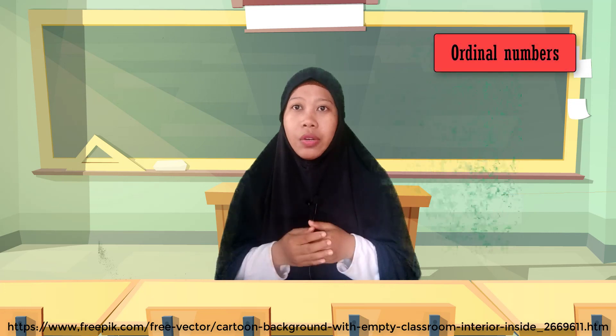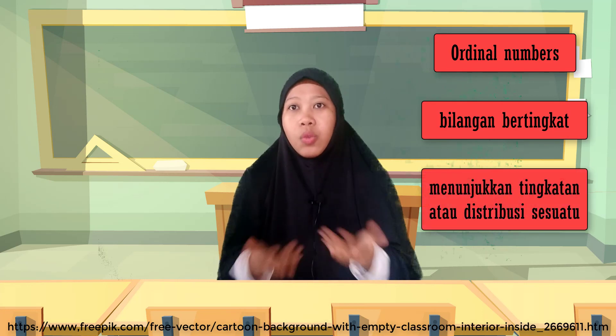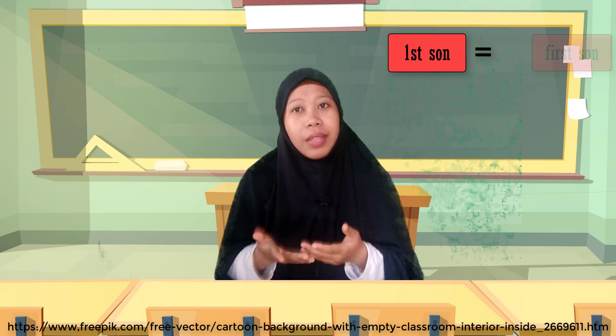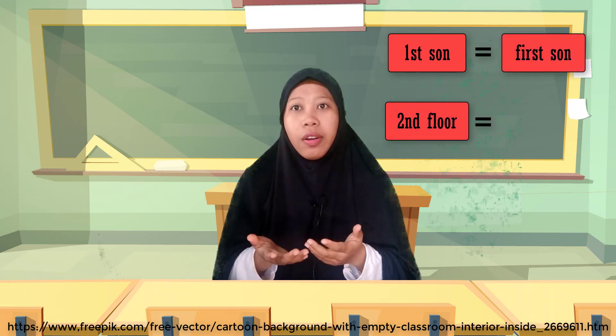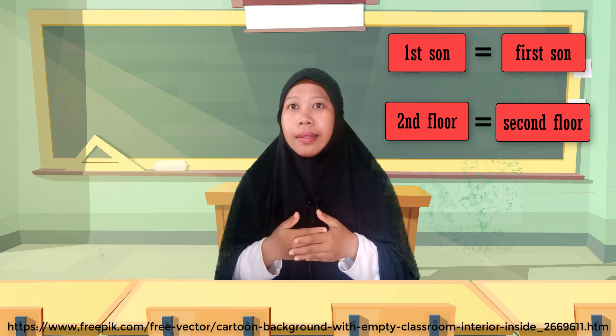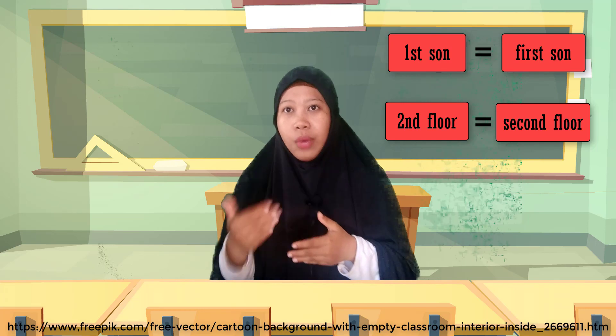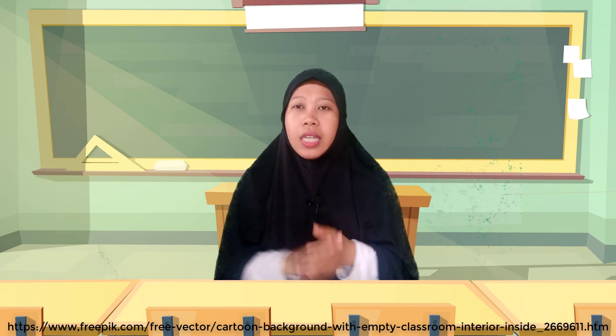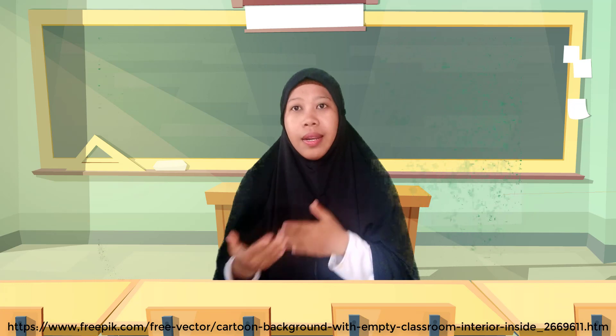Sedangkan ordinal numbers dalam bahasa Indonesia bisa diartikan sebagai bilangan bertingkat, yang menunjukkan tingkatan atau urutan dari sesuatu. For example, 'first son' — anak laki-laki pertama. Or 'second floor' — lantai kedua. Maka ordinal numbers bisa diartikan dengan ke-1, ke-2, ke-3, dan seterusnya. Jika yang digunakan cardinal numbers, dia menunjukkan jumlah; jika ordinal numbers, dia menunjukkan urutan.